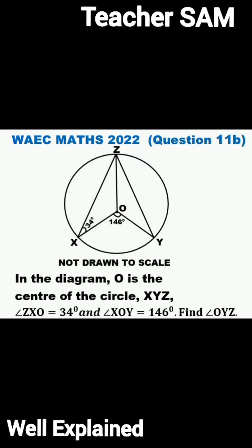Question 11b. We have a sketch of a circle containing some angles, not drawn to scale. In the diagram, O is the center of the circle XYZ. Angle ZXO is 34 degrees and angle XOY is equal to 146 degrees. Find angle OYZ.